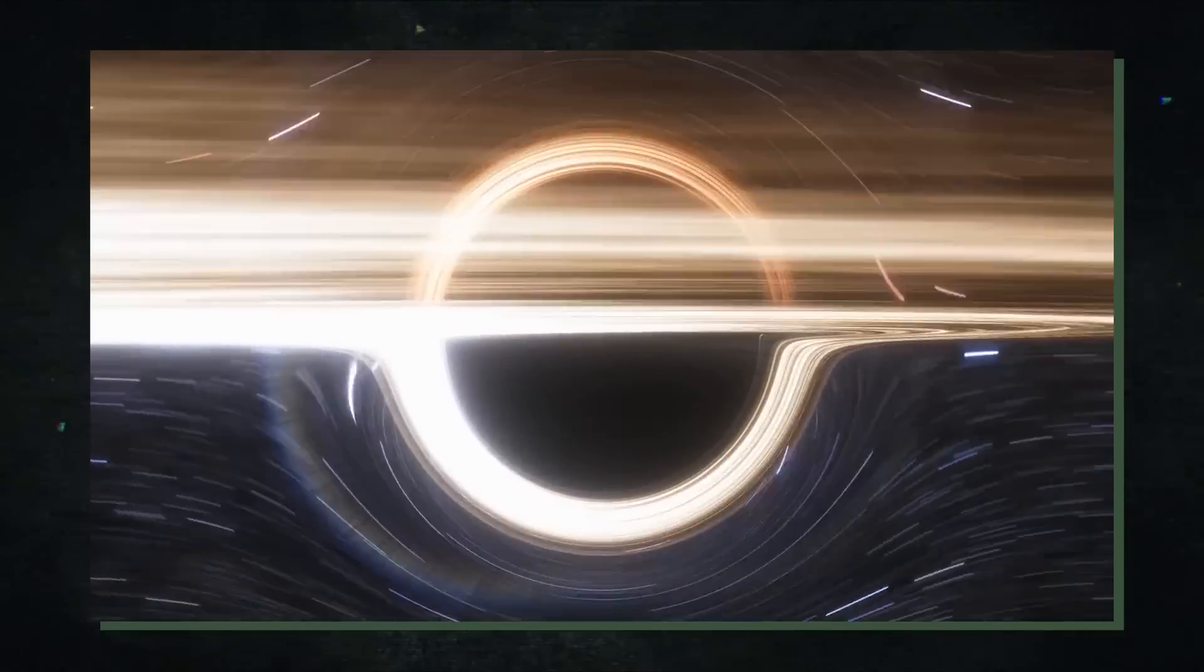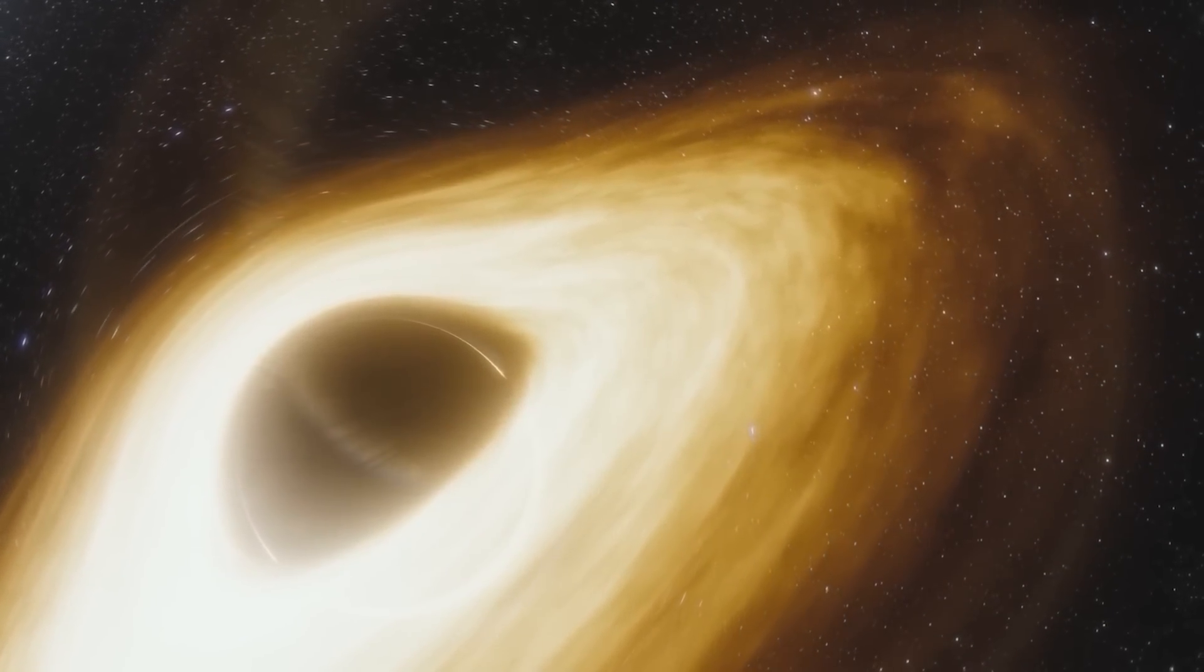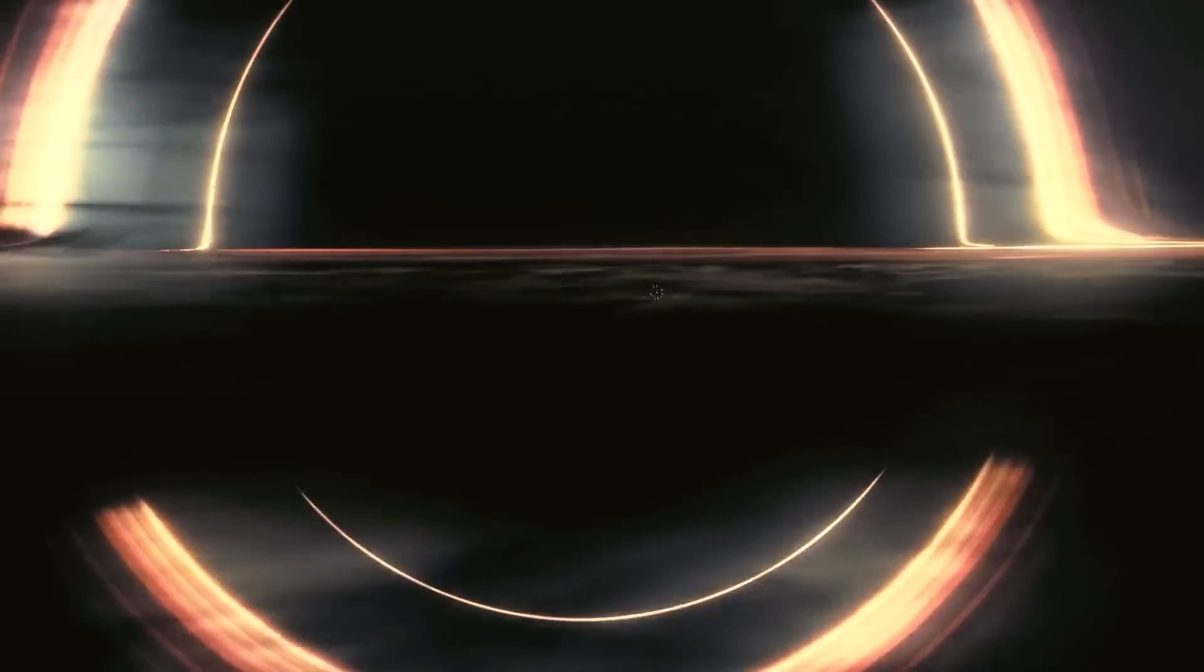Earth would only be an inch across if it were hypothetically squashed into a black hole. The mass of our planet would be entirely contained within the object and would still be incredibly huge.